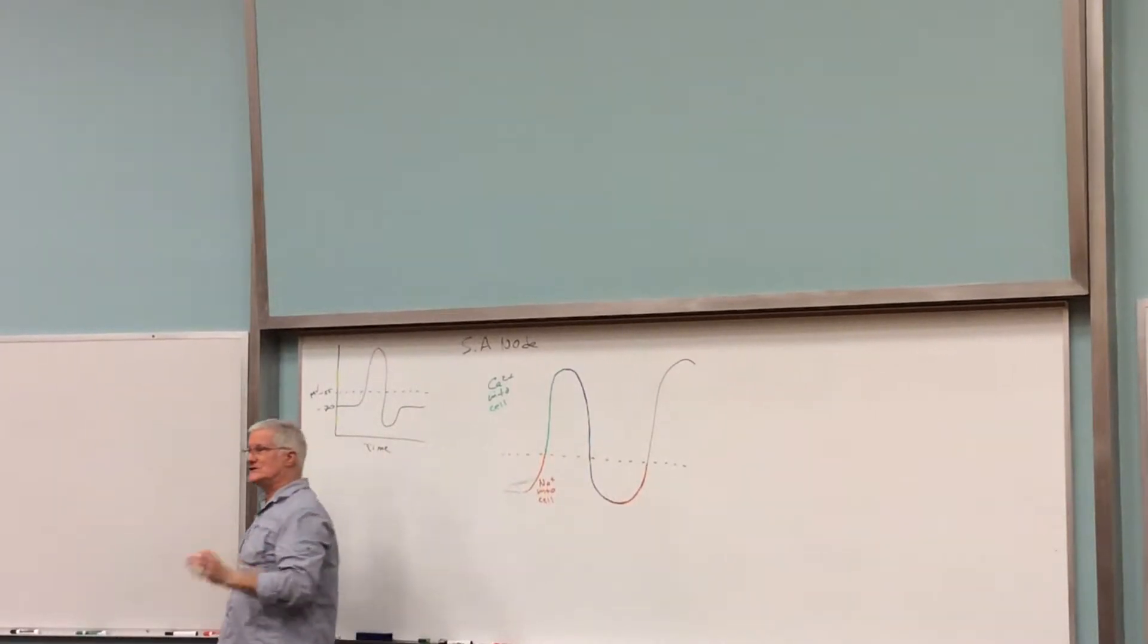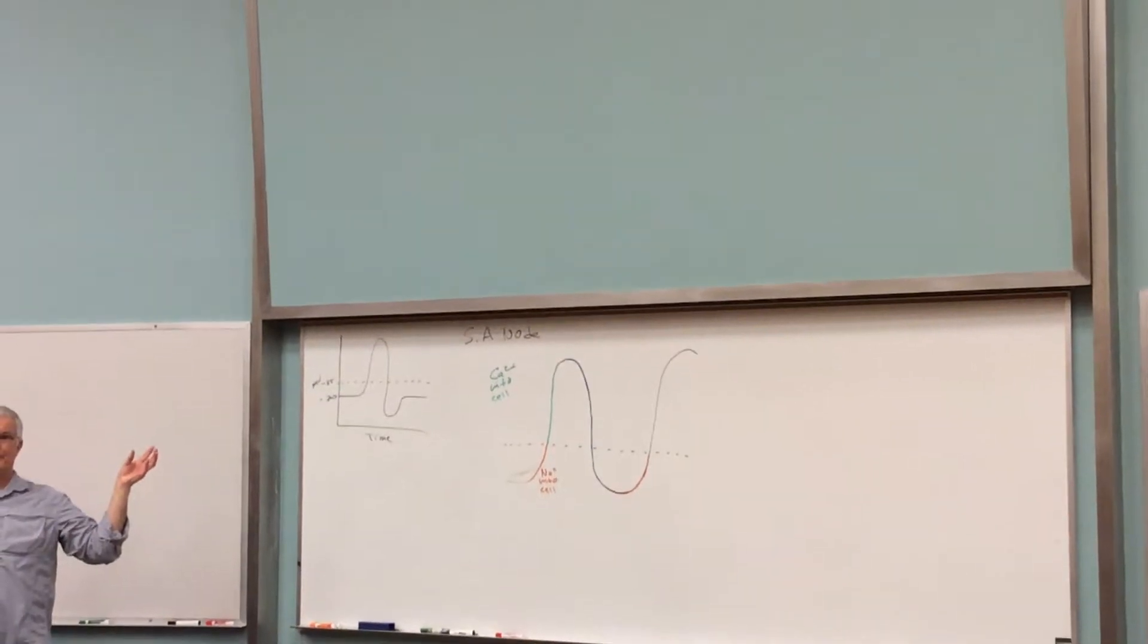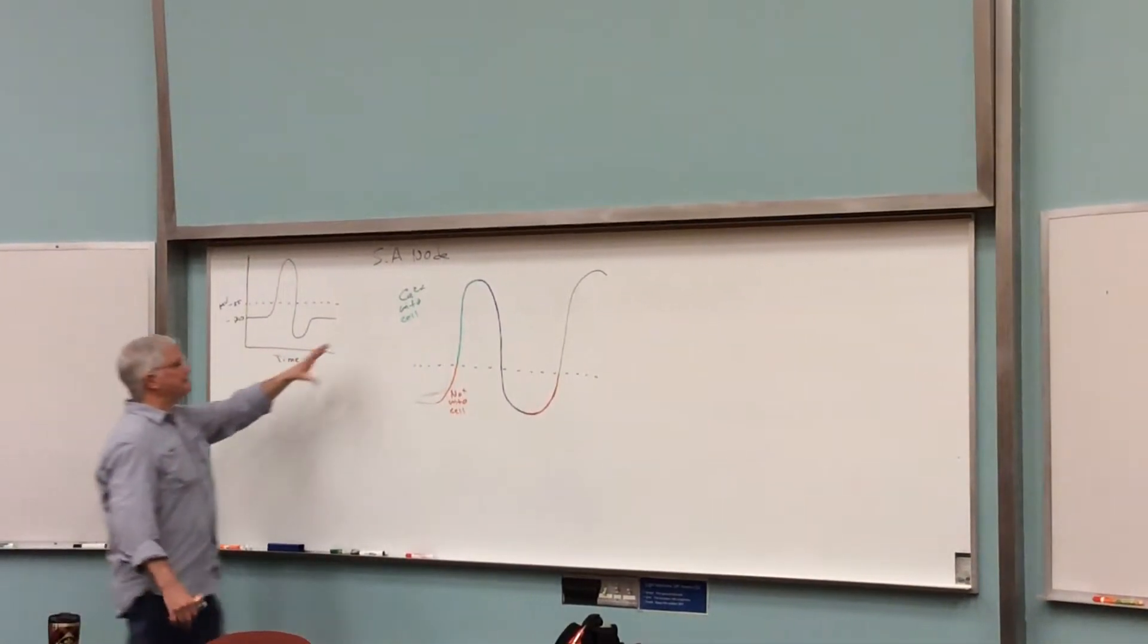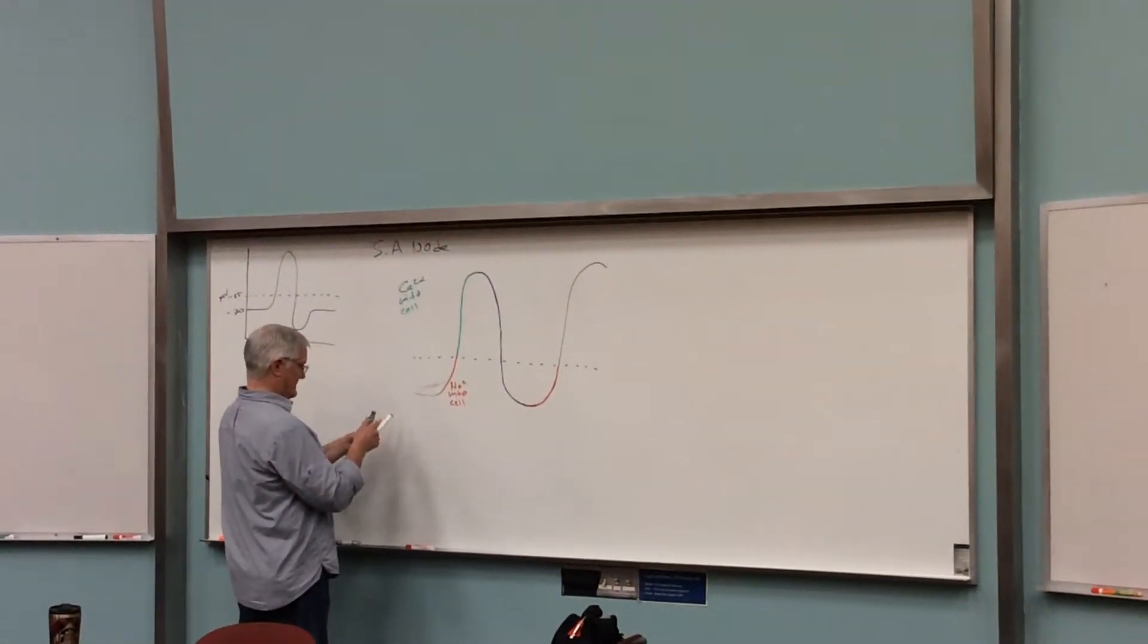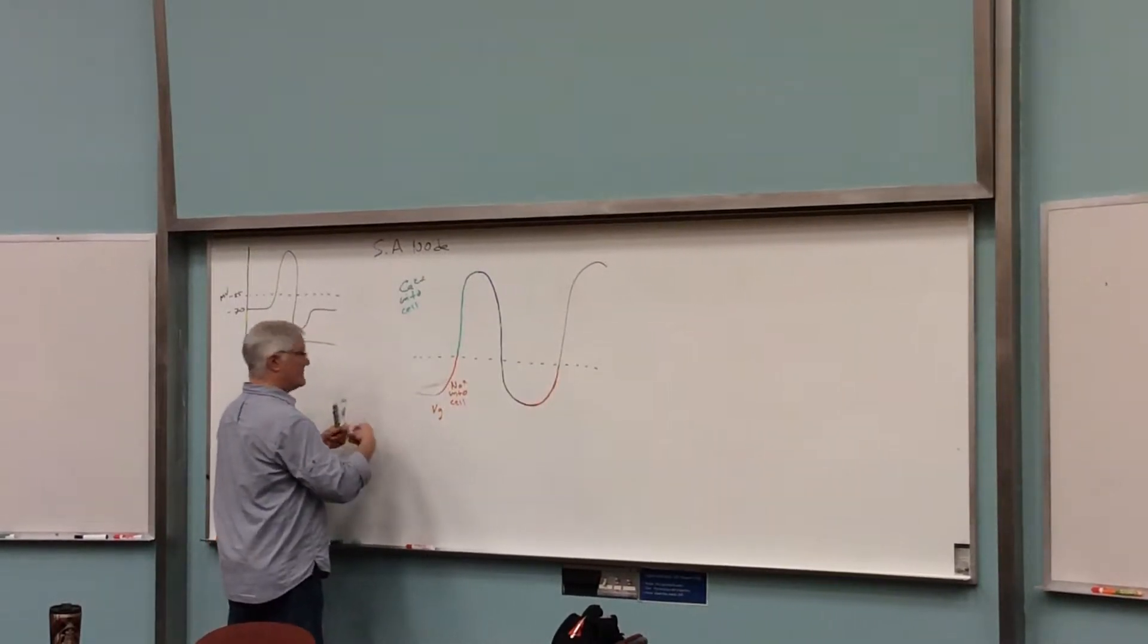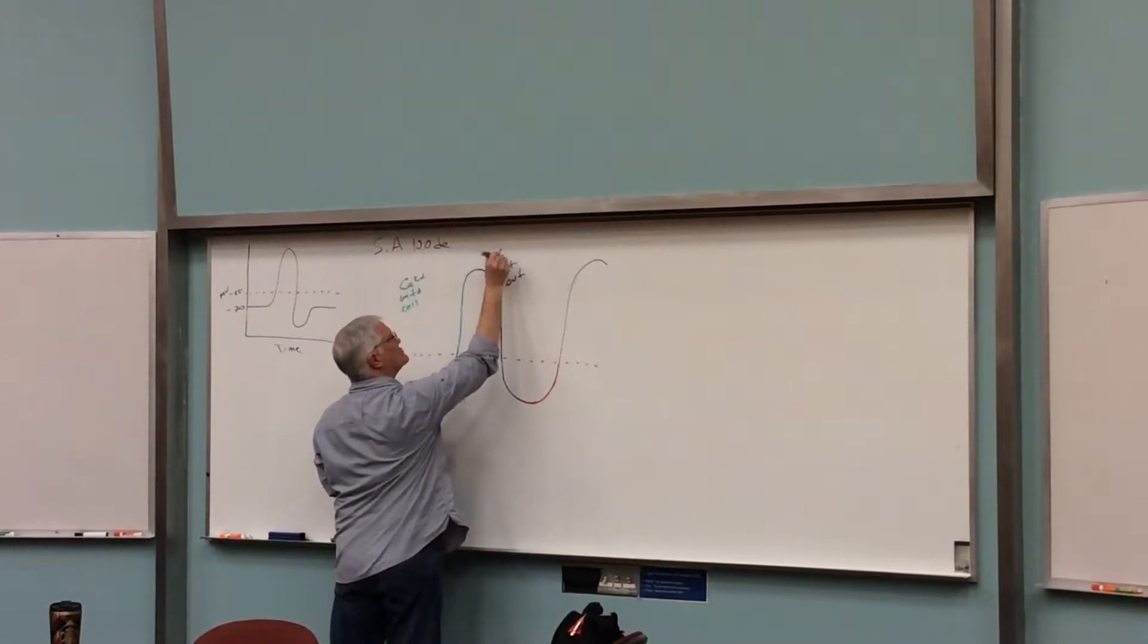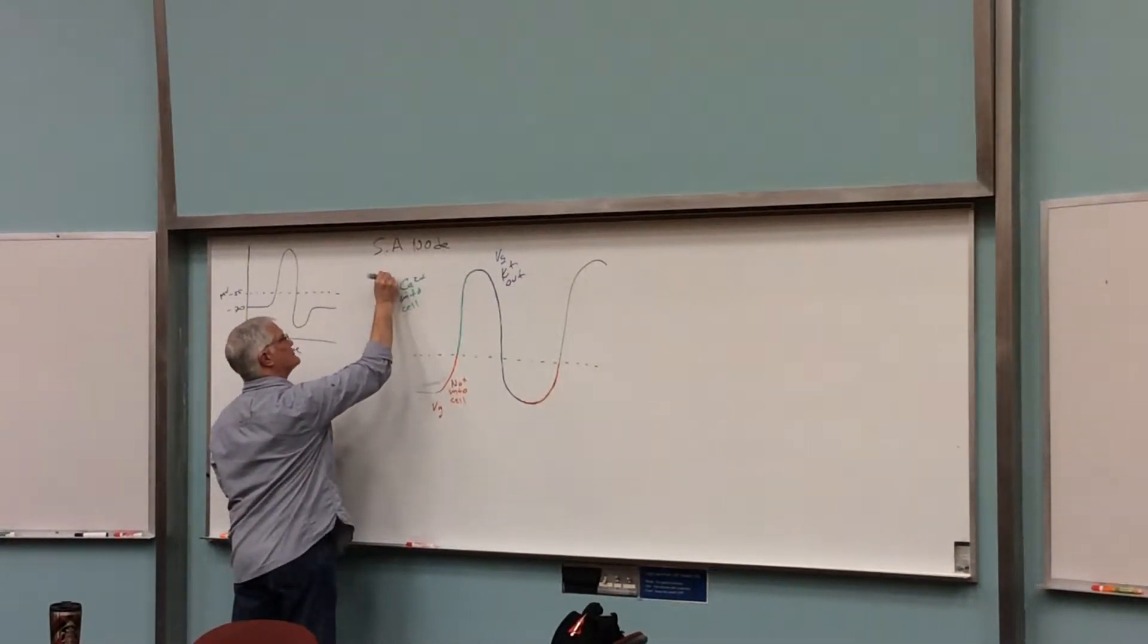Sodium up to threshold, calcium from threshold to the top of the action potential, and then potassium back for the repolarization part. So we have three different voltage-gated channels to think about in an SA node's membrane, or the AV node, or the Purkinje fibers. They're all the same type of cell.